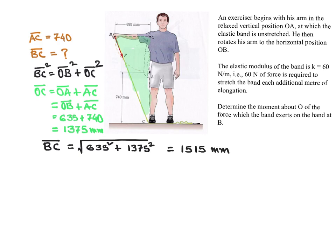How much is the extension or the elongation of the band? The elongation, if we call it delta, that would be BC minus its original length AC.